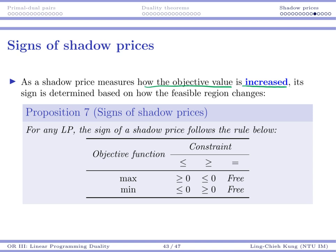In practice, the problem scales are also large. So typically, when you increase the right-hand side by one for one practical problem, for one practical constraint, the optimal solution is always there. We somehow want to know the shadow prices, and one interesting thing is that its sign is determined based on how the feasible region changes.